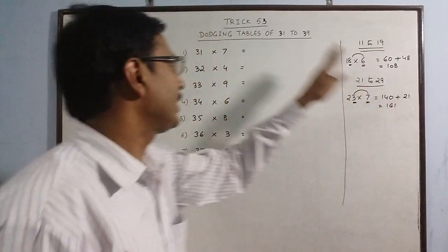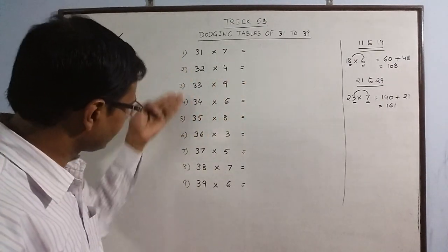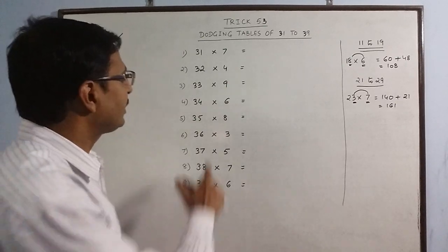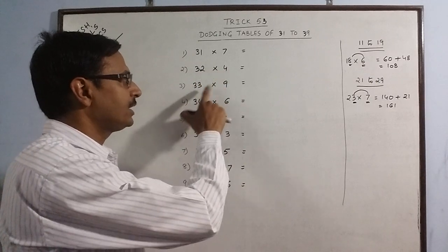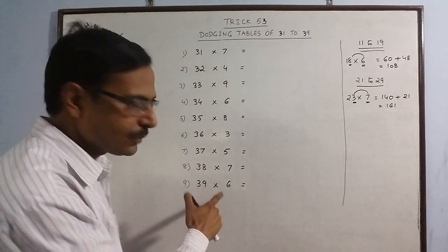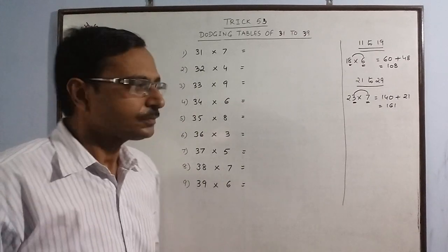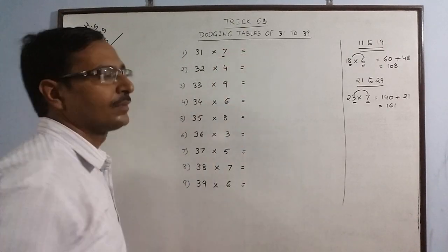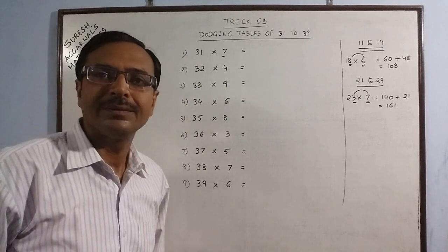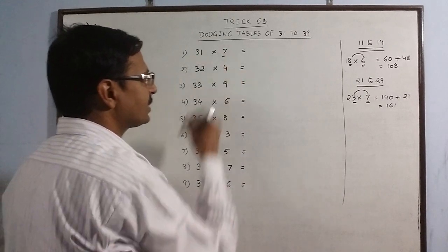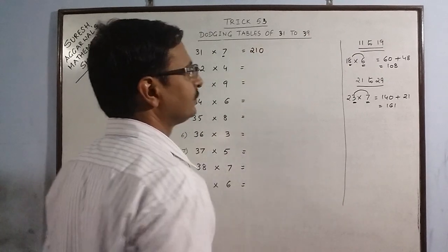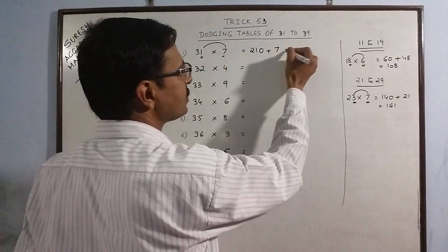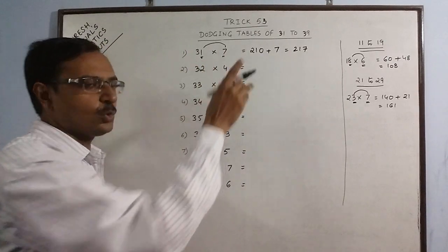Following these two, we are writing dodging tables of 31 to 39. I have so many numbers here: 31 to 39. Say 31 times 7, 32 into 4, 33 into 9, 34 into 6, and 39 into 6. Let's learn this method. It's as easy as these two methods. What we do is: this number 7 is to be tripled, multiplied by 3. 7 threes are 21, then put a 0 and multiply this by the units place: 7 times 1 is 7. Add the two numbers, you get 217, the dodging table result of 31 into 7.